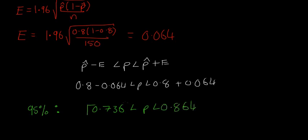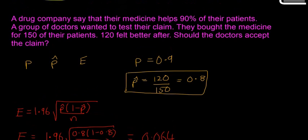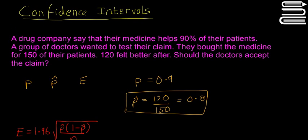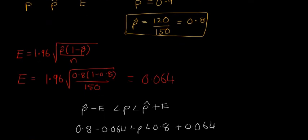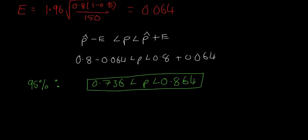So we're 95% certain that the drug helps this many people. So that means we'd probably reject the claim of the drug company that it helps 90% of their patients. So that's the thing about statistics. You can never really be 100% right or certain.